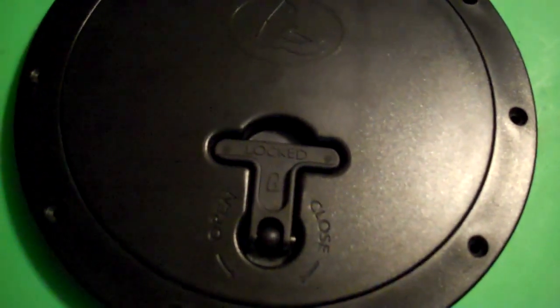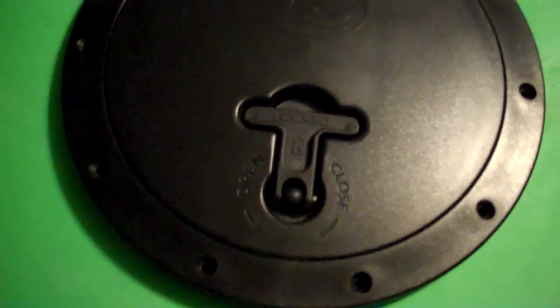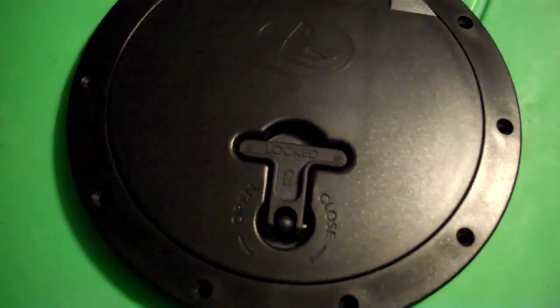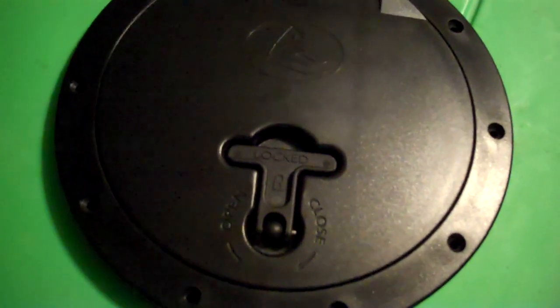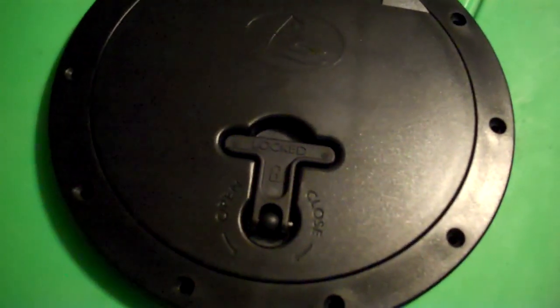Once you have the hole cleaned up, put the hatch in the hole without the gasket. Check it out. Line it up. See how it fits. And if it fits good, take it back out, put the gasket in and recheck it.